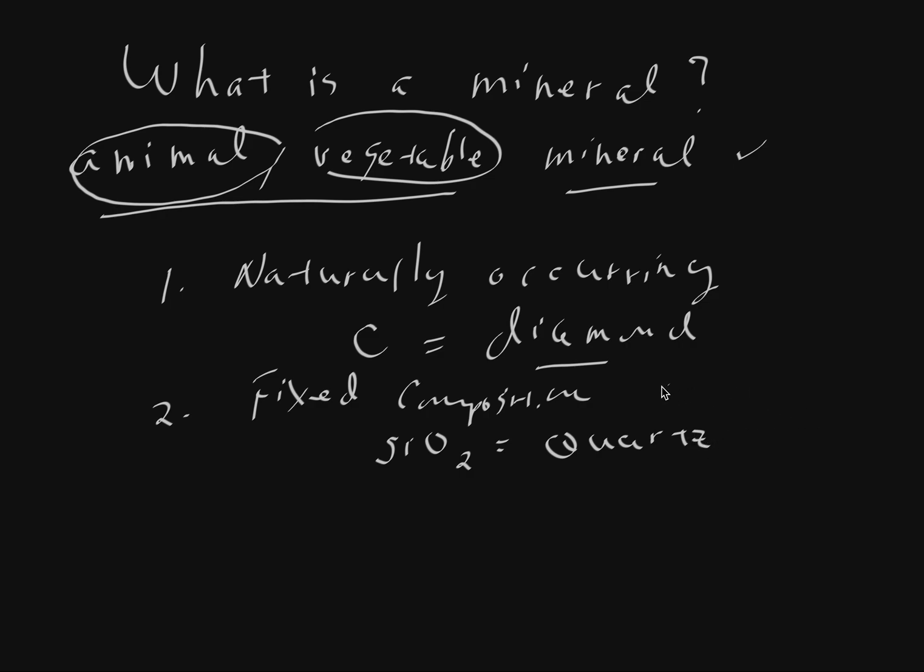And you can really think of a fixed composition as being equivalent to a recipe. How do we make something? Or not necessarily how we make it, but how would nature make it? So if nature is going to make quartz, you'll need two parts oxygen to one part silicon. If you have those elements in any other ratios, then you're not going to be able to make quartz, or you'll have material left over. If you want to make diamond, then you need carbon and nothing else. Pure diamond should be pure carbon. So when we say that minerals have fixed composition, what we mean is we can write a formula for them.